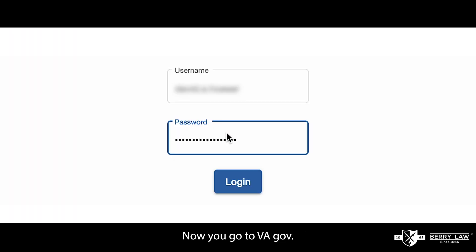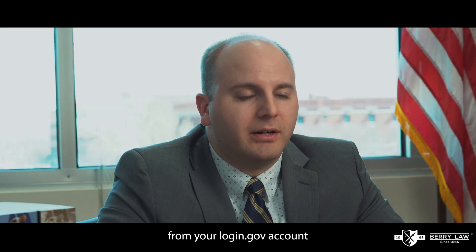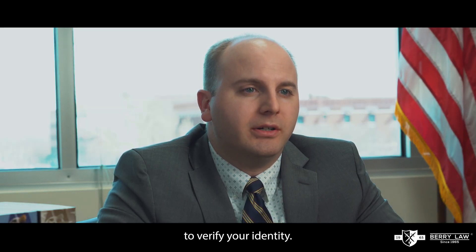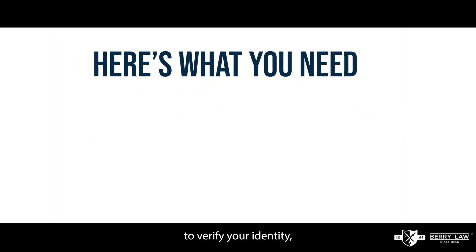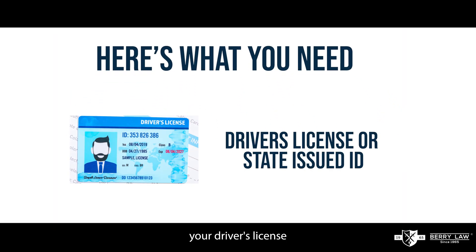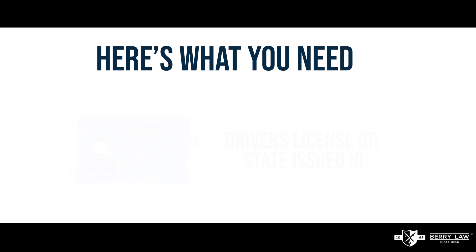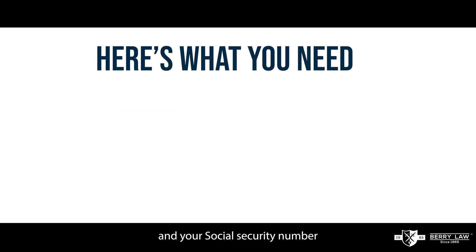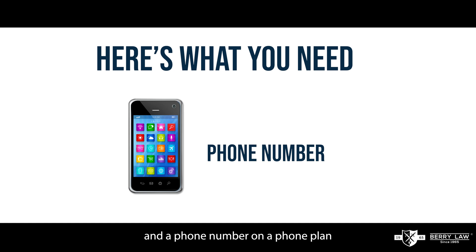Now you go to VA.gov, enter your login from your login.gov account, and then you'll be asked to verify your identity. Here's what you'll need to verify your identity: your driver's license or non-driver's license state issued ID, your social security number, and a phone number on a phone plan that's in your name.